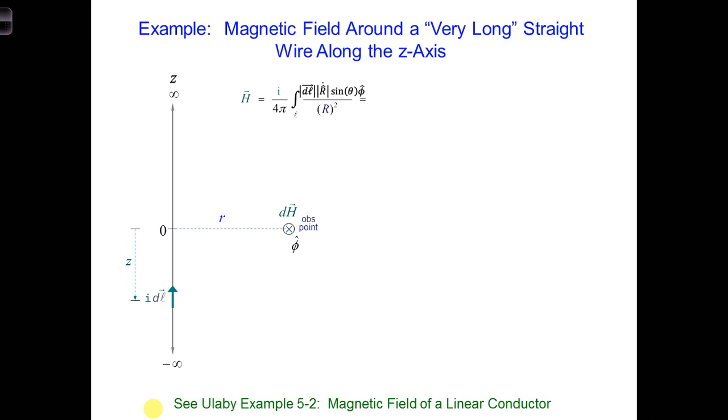This is shown a little more clearly here. So applying cylindrical coordinates to this problem, we need to know what r-hat is - r-hat going from our current segment to our observation point.